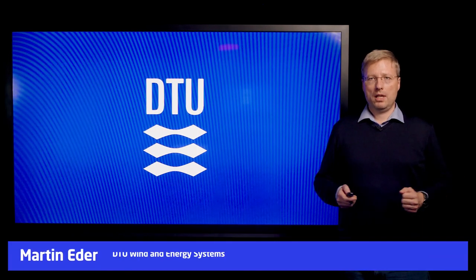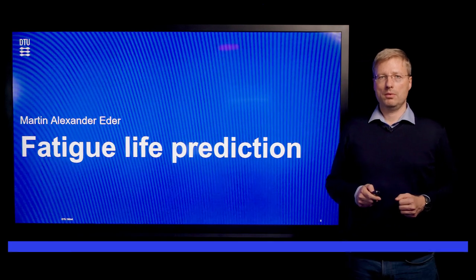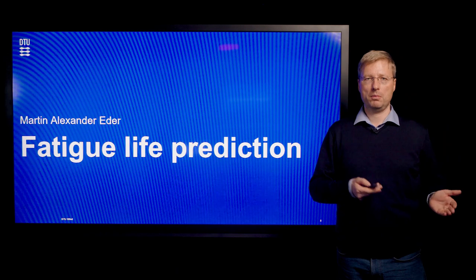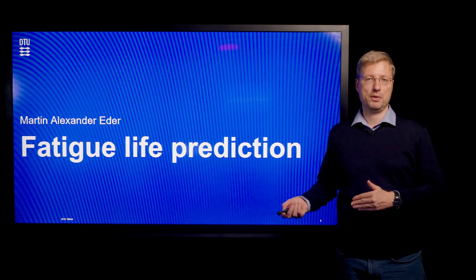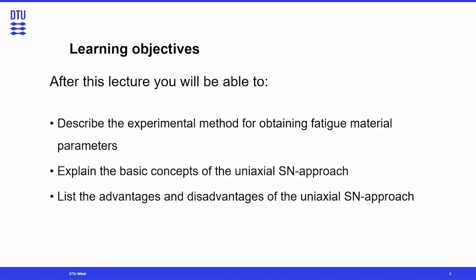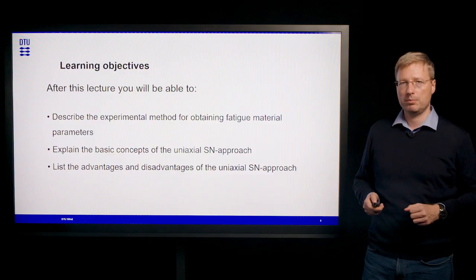Welcome back to my lecture about fatigue. In the second part of my lectures, we will talk about fatigue life prediction. We will be using the information we obtained from the first part, what we can observe, and try to make some meaningful predictions. After this lecture, you should be able to describe the experimental method for obtaining fatigue material parameters, explain the basic concept of the uniaxial SN approach, and list the advantages and disadvantages of the uniaxial SN approach.